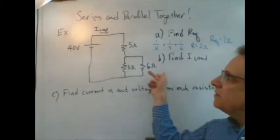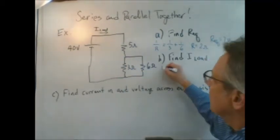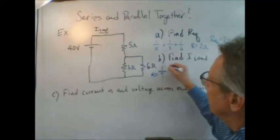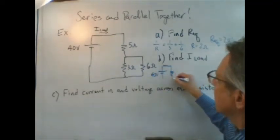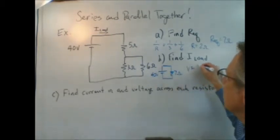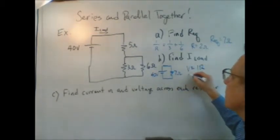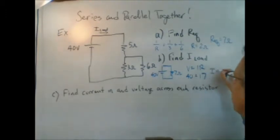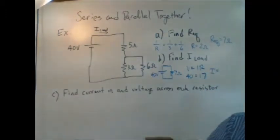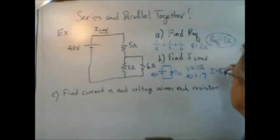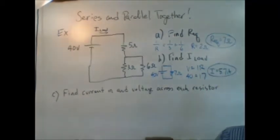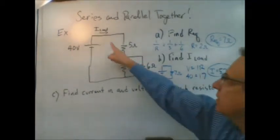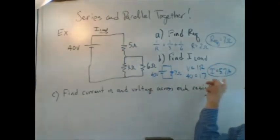The next thing we need to find is the current being drawn out of the battery. If a 40-volt battery is driving a seven-ohm resistor, then we can use V equals IR. 40 equals I times seven, and I then equals 5.7 amps. Let's circle these so we keep track of that. So that's the current that's being drawn out of the battery, 5.7 amps.